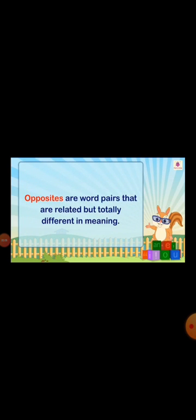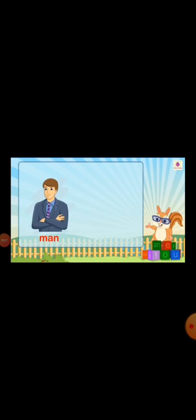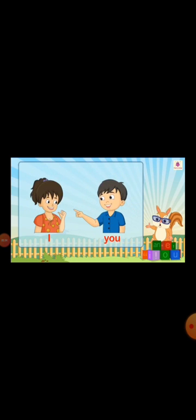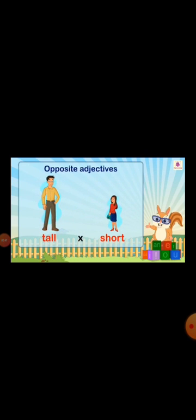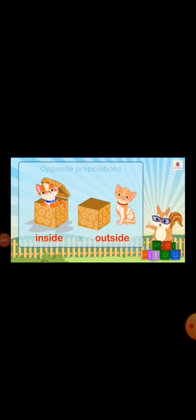Opposites are word pairs that are related but totally different in meaning. These words can be common nouns, pronouns, adjectives, verbs, or prepositions. For example: man and woman are opposite common nouns; I and you are opposite pronouns; tall and short are opposite adjectives; sit and stand are opposite verbs; inside and outside are opposite prepositions.